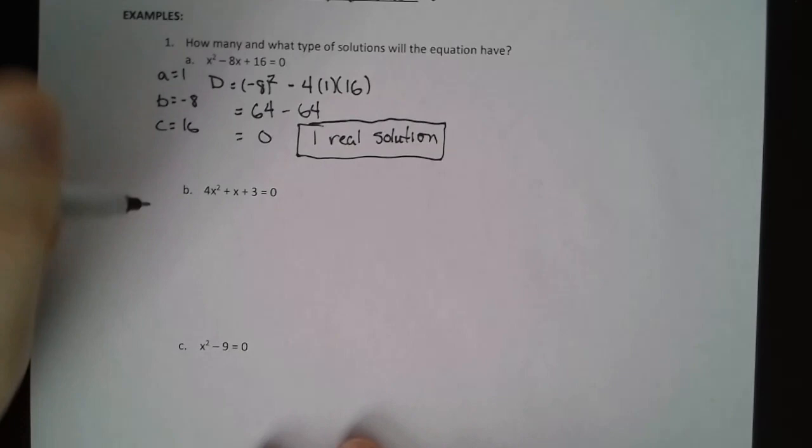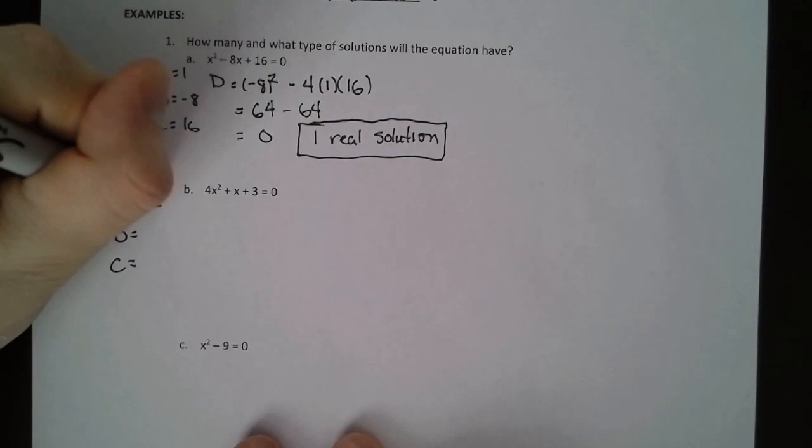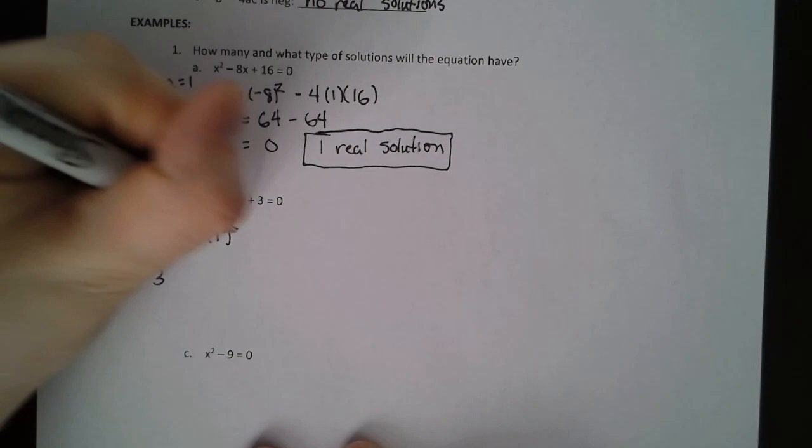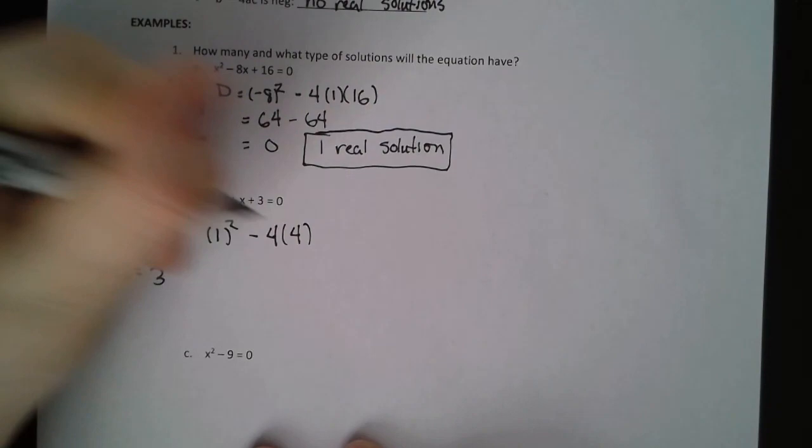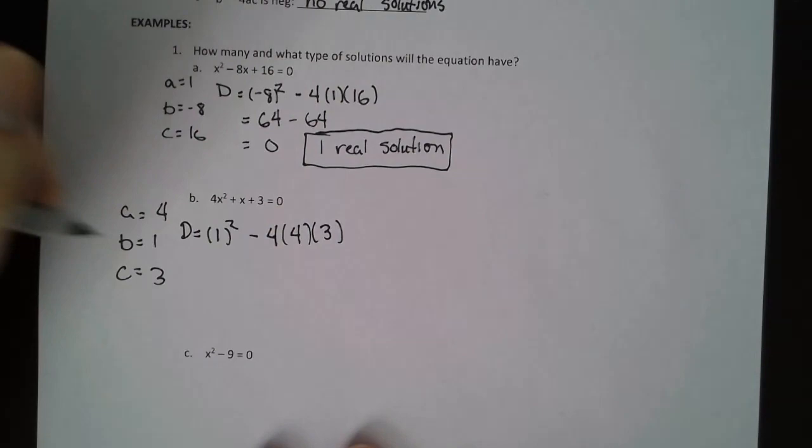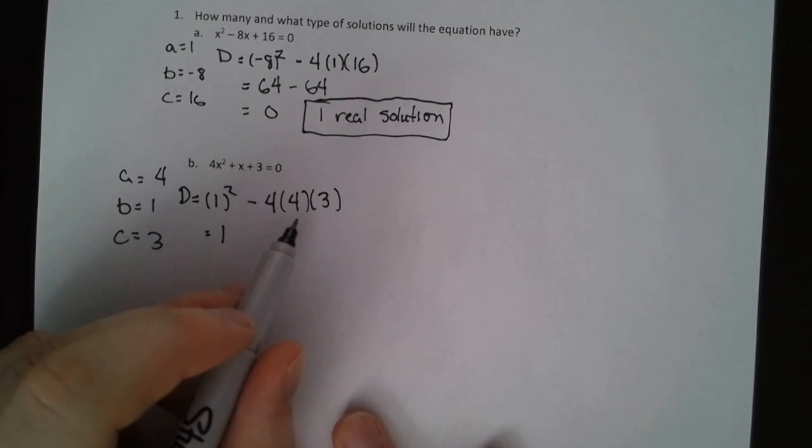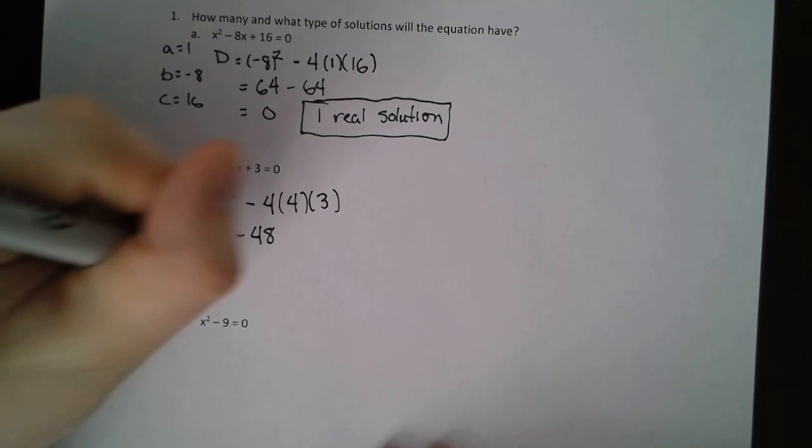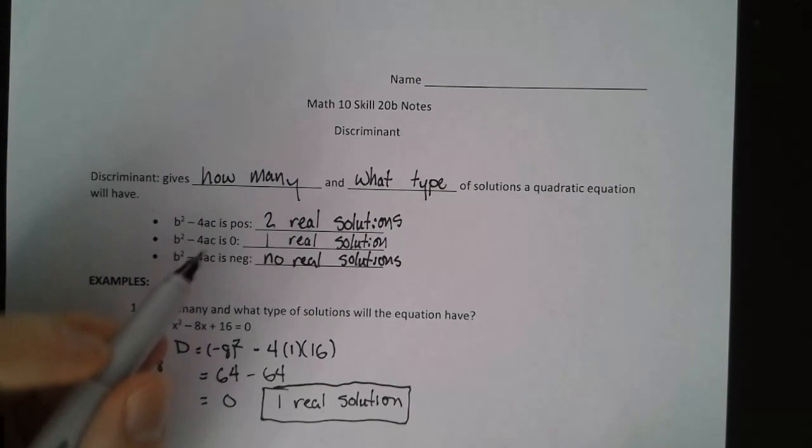Let's look at this next example. Again, in standard form, we have our a, b, and c values given to us. a is 4, b is 1, and c is 3. So using our discriminant formula, we want b squared, 1 squared minus 4 times a, which is 4 times c, which is 3. d equals that. 1 squared is just 1. And we have negative 4 times 4 times 3. That's a negative 48. 1 minus 48 is negative 47.